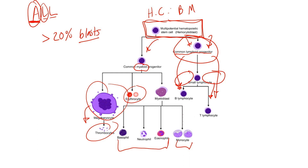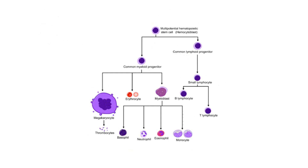In all acute leukemias — acute, not chronic — they are defined by having greater than 20% blasts on the blood smear or CBC. It must be greater than 20%. If it is not, whether it be a lymphoblast as in ALL or a myeloblast, it does not fit the definition of leukemia and is called something else. So ALL is defined as greater than 20% lymphoblasts on a blood smear or CBC.